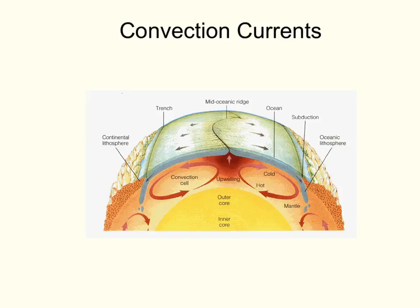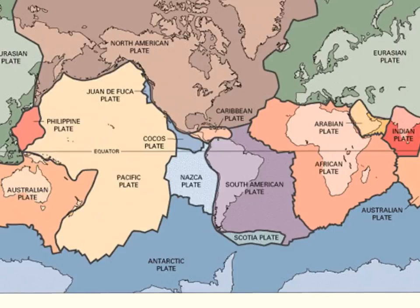These plates are moving very, very slowly — about one to ten centimeters per year. When Pangea began to break apart it was 225 million years ago, and it's taken that long to go from one supercontinent to all the separate continents we have now. Reviewing divergent plates: the most famous area is the Mid-Atlantic Ridge, where the Eurasian and the North American plates are separating from each other. This separation also extends down to the African plate and the South American plate.